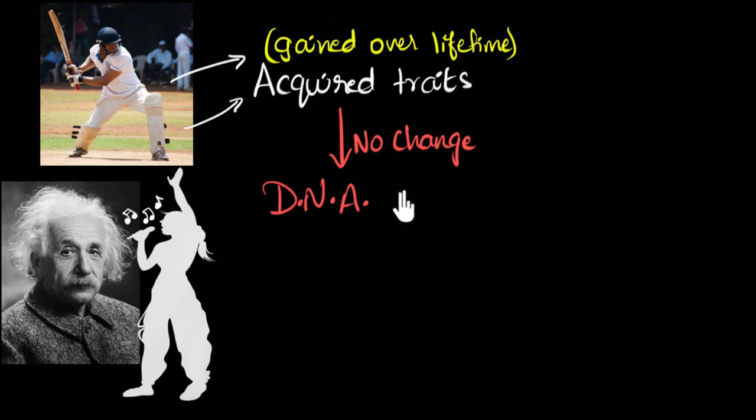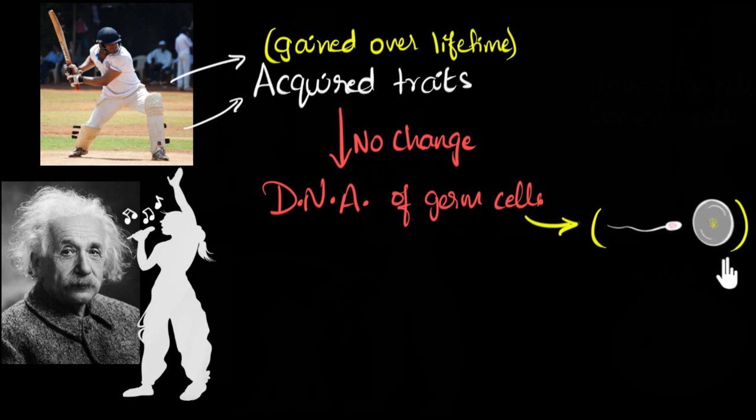And to be very specific, what I mean is no change in the DNA of germ cells. Germ cells are basically the sperm cells and the egg cells, which are involved in reproduction. And as you might know, it's the sperm that fertilizes the egg and eventually grows into a baby. So that's why I'm talking about these germ cells, the sperm and the egg. It causes no changes in the DNA of these cells. Of course, it causes no changes in the DNA of any cell. But more importantly, it does not cause changes in the DNA of the germ cells. And that's the reason why this cannot be inherited. Not inherited.